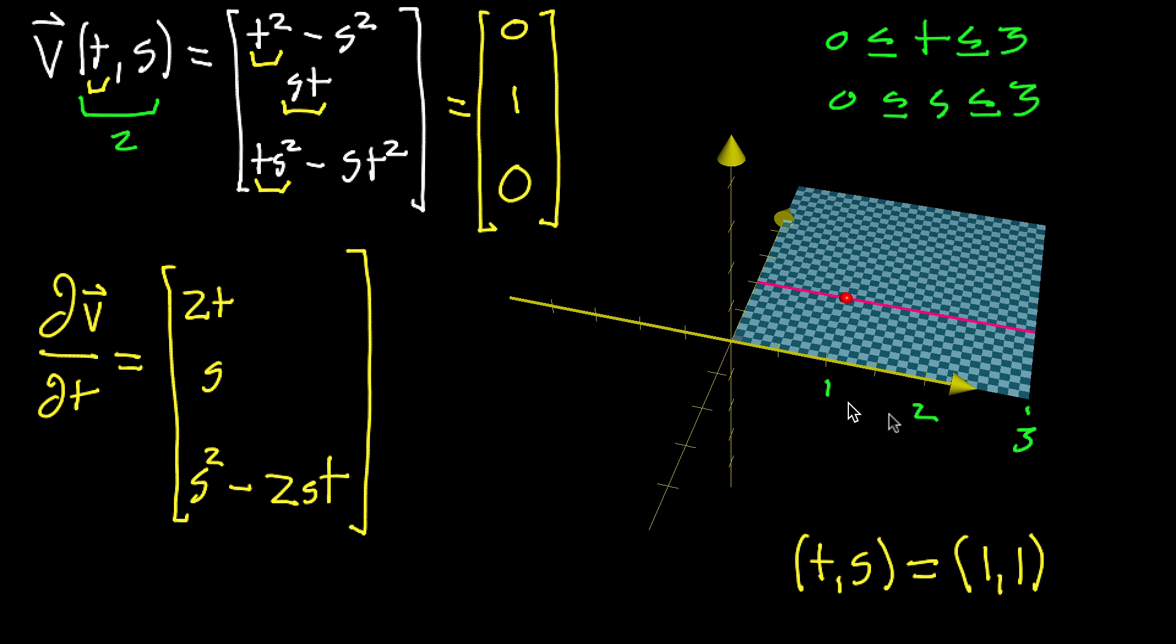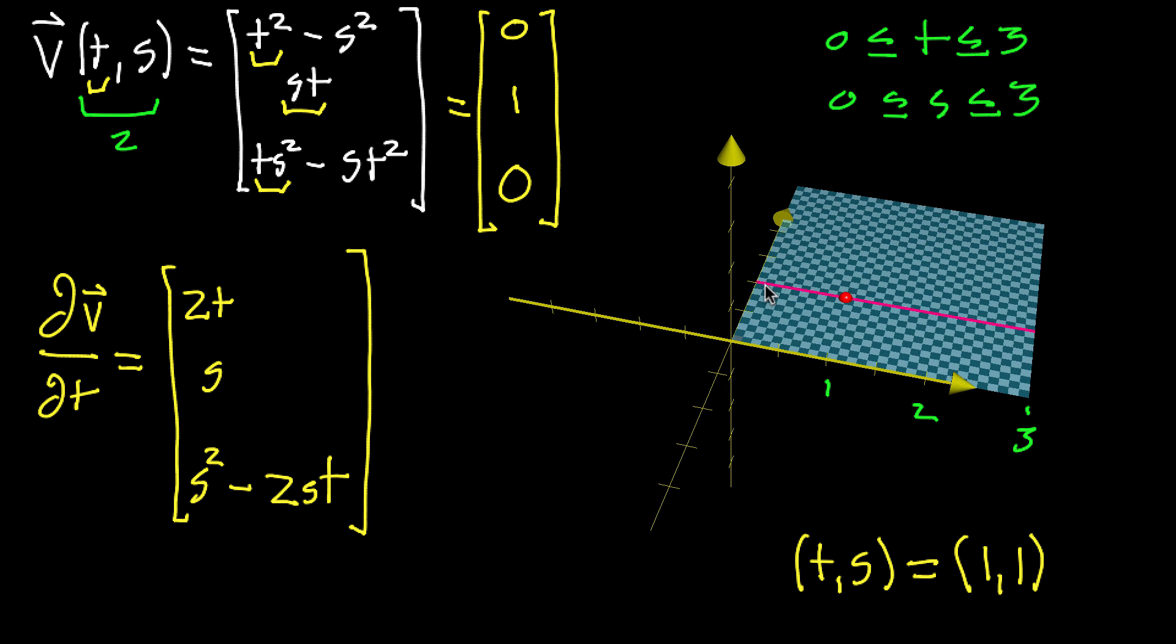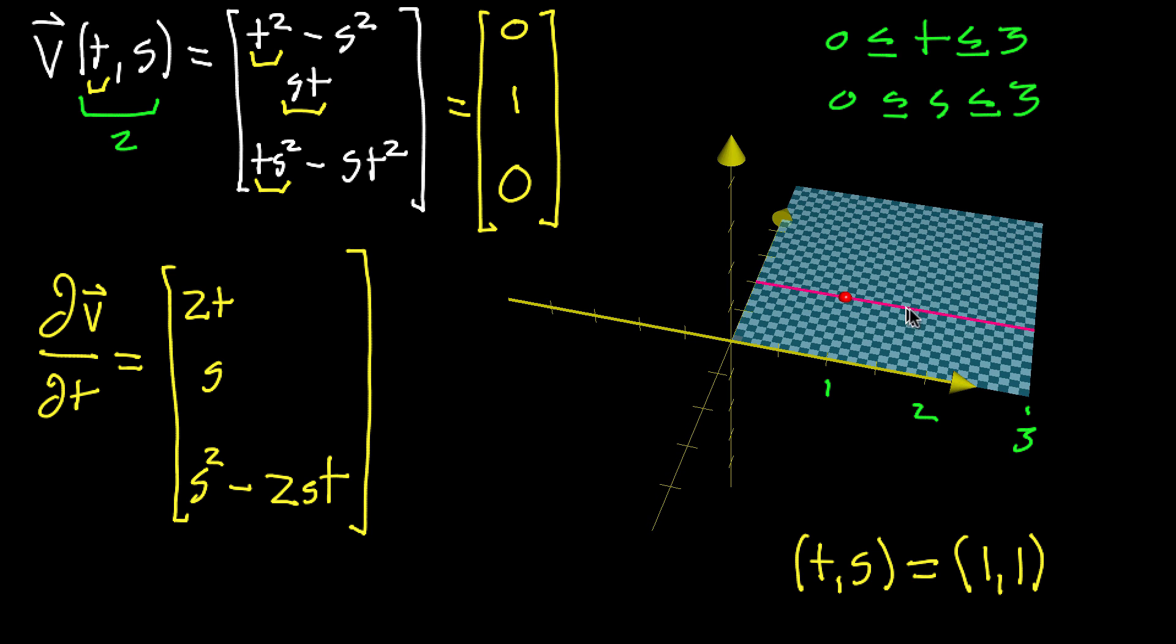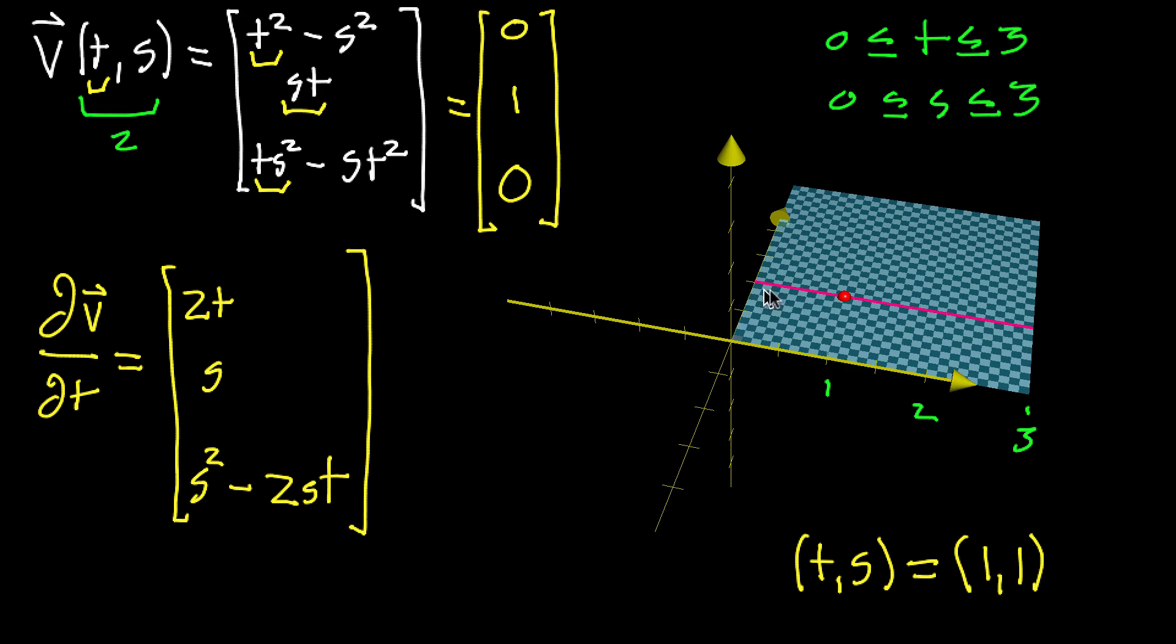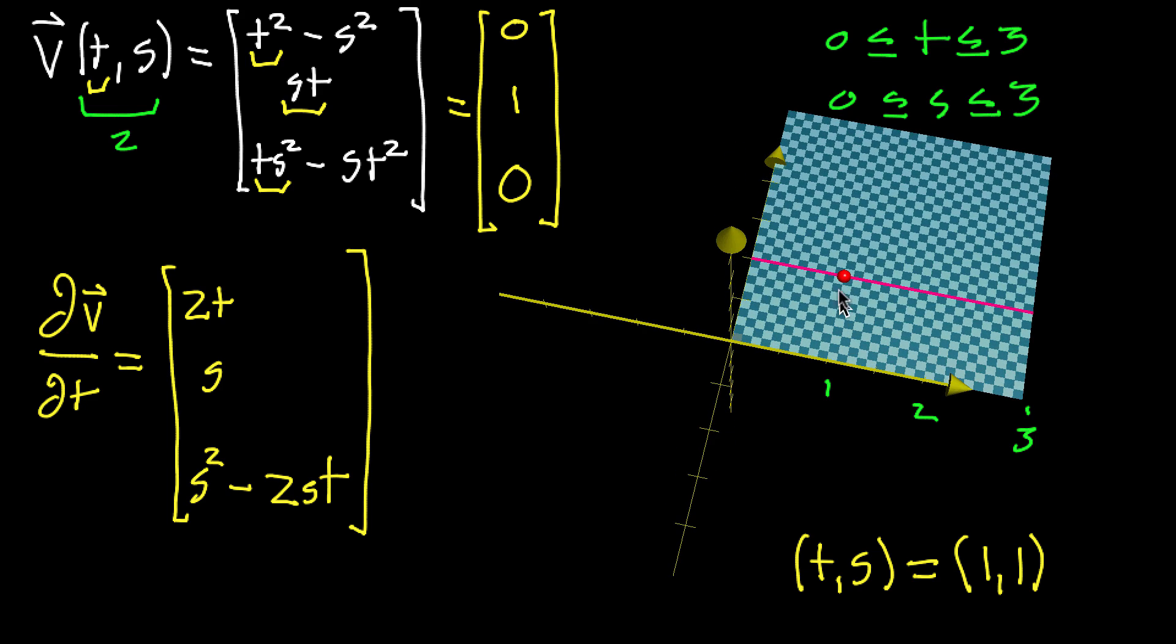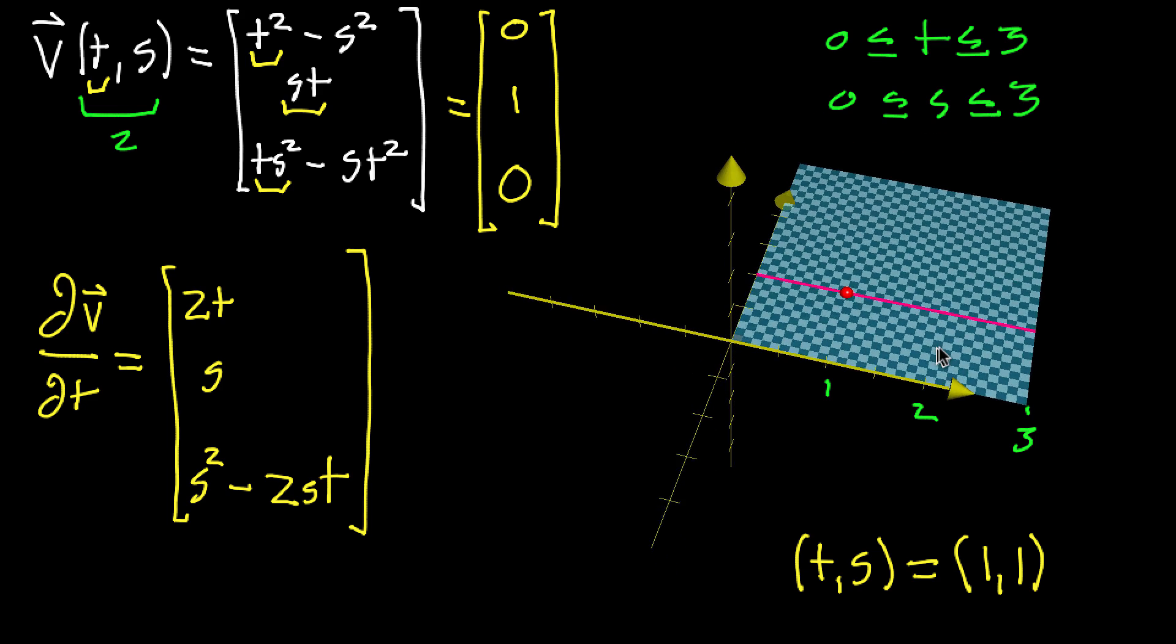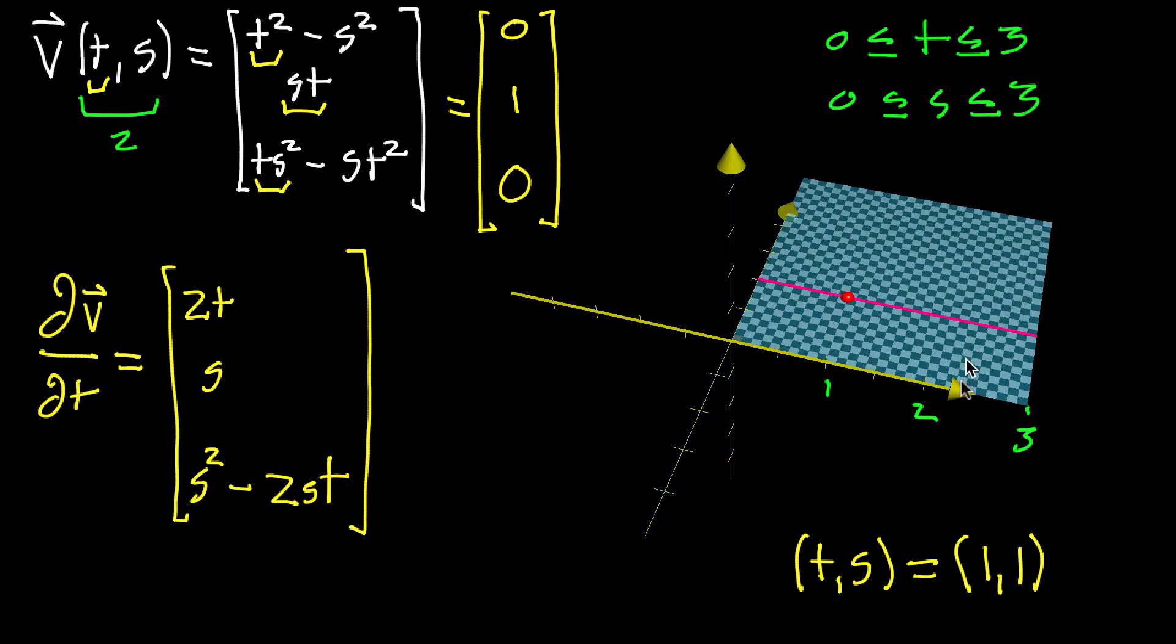This represents 1, 2, 3 of t-values. And this line here represents the constant value for s, so this will be s constantly equaling 1, which you can know because it's passing through the point 1, 1. And then otherwise you're just letting t range freely.